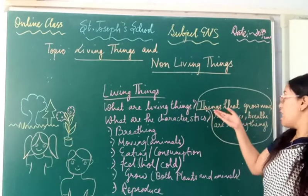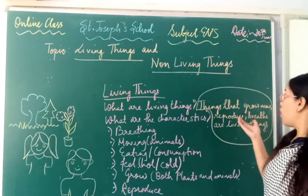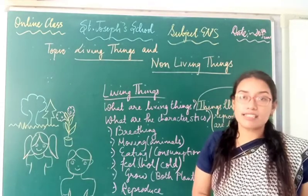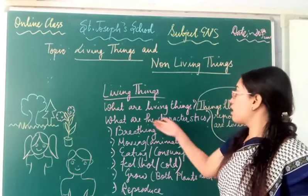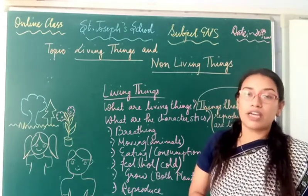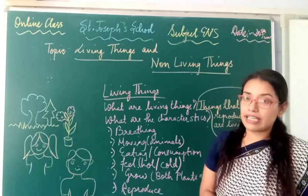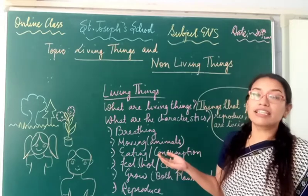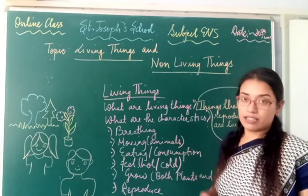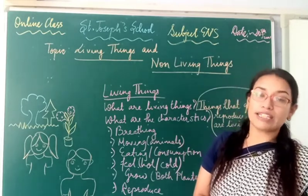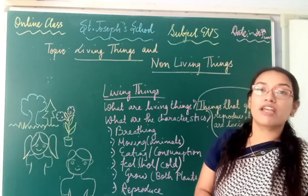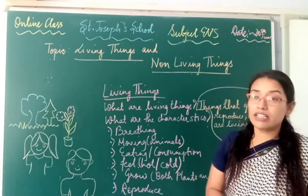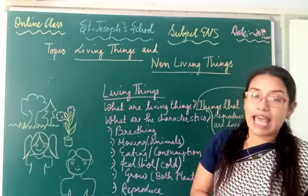What are living things? Things that grow, move, reproduce, and breathe are called living things. Now, what are the characteristics of living things? How do we differentiate whether a particular thing is a living thing or a non-living thing? Living things have certain characteristics — like they breathe. Breathing is one of the most important characteristics, in spite of whether they move or not. Living things include plants and animals.